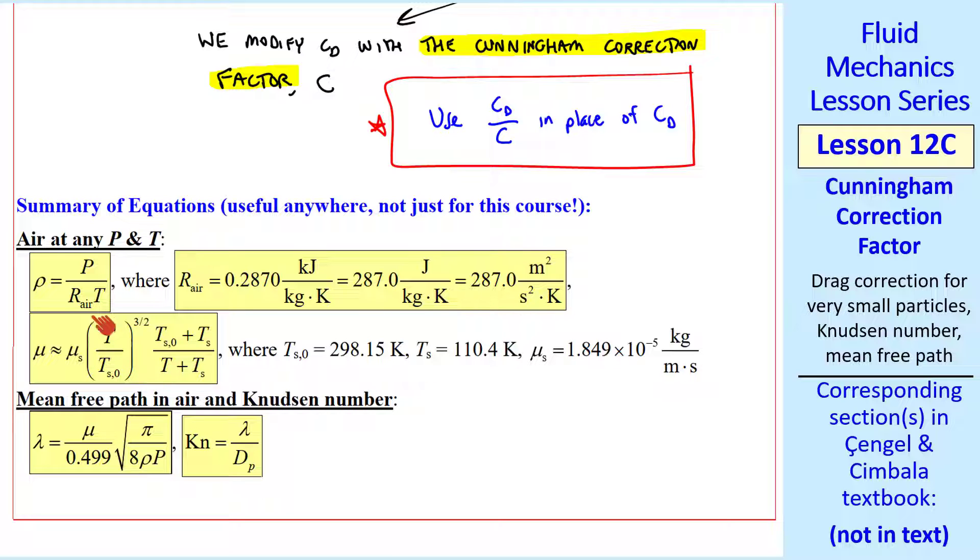This viscosity equation is the Sutherland equation, where these are the constants in the equation that appear here. This is the equation for mean free path for air and Knudsen number, which I showed above. So this grouping of equations is valid for air at any pressure and temperature.